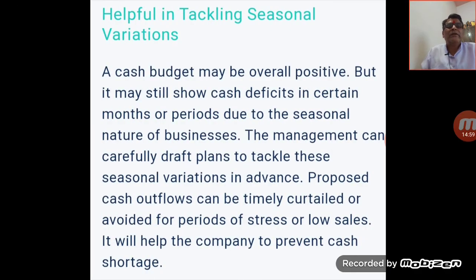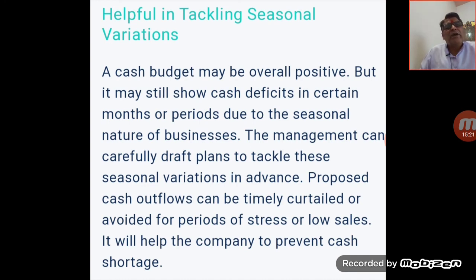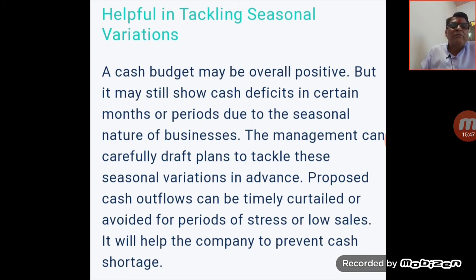The second importance is seasonal variation. A cash budget may be overall positive, but it may still show cash deficits in certain months due to the seasonal nature of the business. The management can carefully draft plans to account for these seasonal variations in advance. Proposed cash outflows can be timed and adjusted for periods of stress or low sales, helping the company prevent cash shortages.